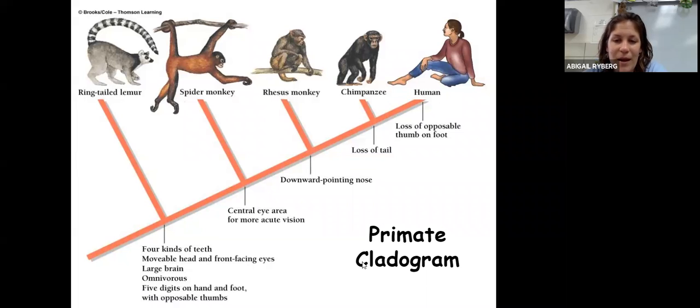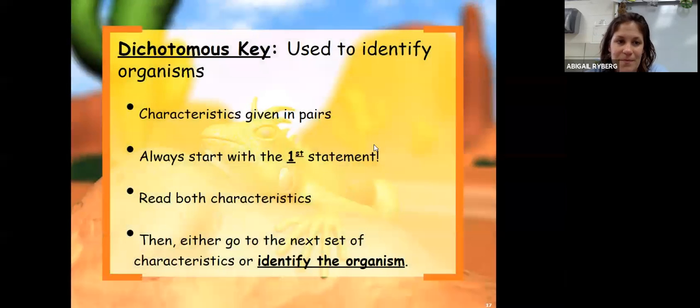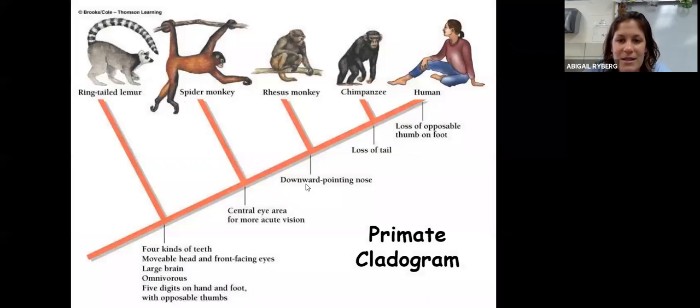Here's a primate cladogram. Again, in my head, I start here at the bottom and move up, and if we don't have that trait, you kick it off. So the first trait here, the ring-tailed lemur gets kicked off. We continue on, and the next one is a central eye area for more accurate vision. The spider monkey gets kicked off and we move on and so on. Let me go back to this one really quick to just show you that in this case, with these traits, the chimpanzee is most closely related to a human than the other organisms.